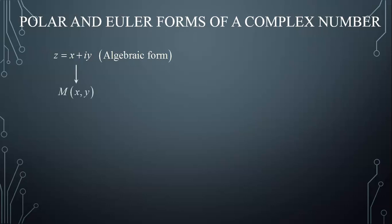And in the complex plane, we know that this complex number is represented by the point M of Cartesian coordinates X and Y. However, we know that the point M can also be represented using its polar coordinates, R and θ.